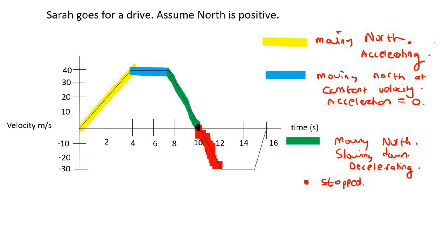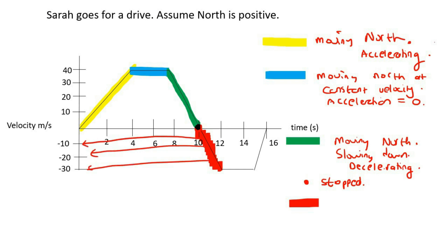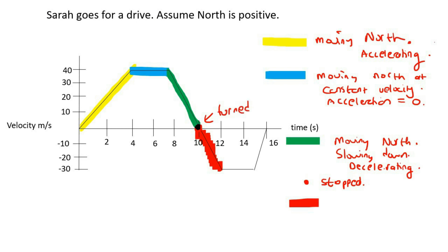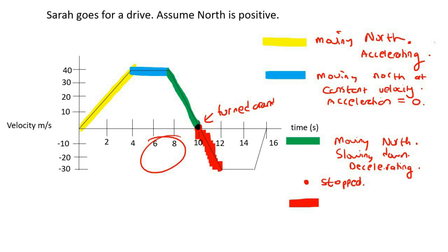Moving on to this section: some learners say she's slowing down, but if you look at the velocity values — starting at 10, then 20, then 30 — Sarah is going faster and faster. The negative just means she's now going in the other direction, so she turned around here. In the whole previous area she was travelling north; now she's travelling south, and accelerating.